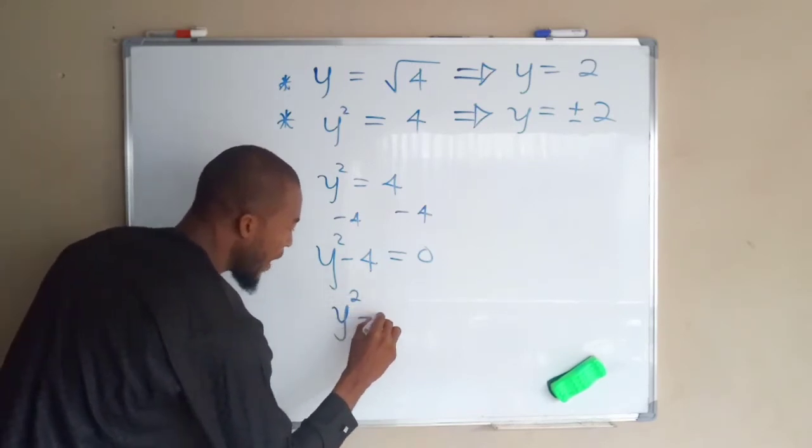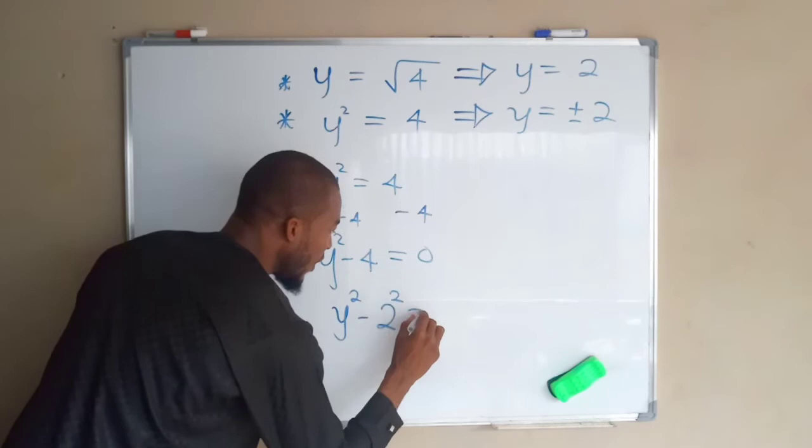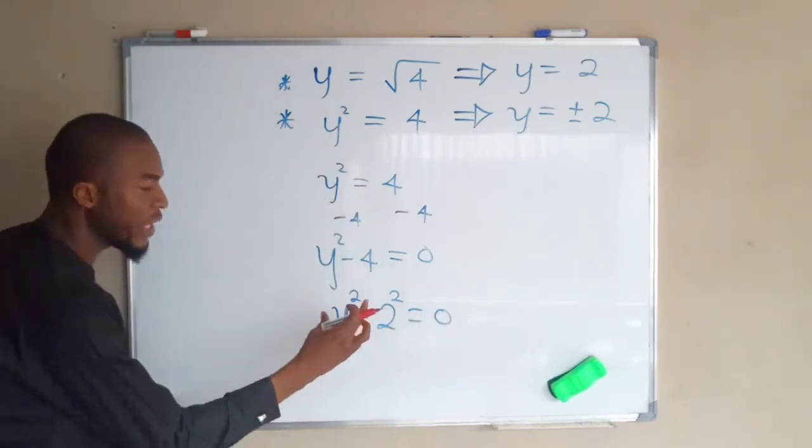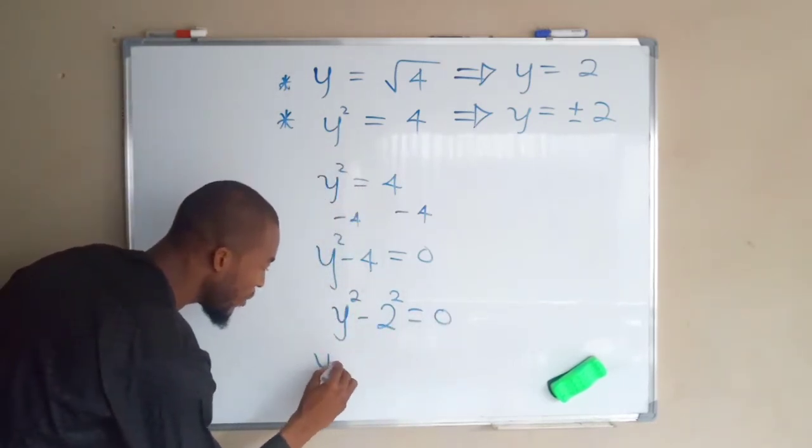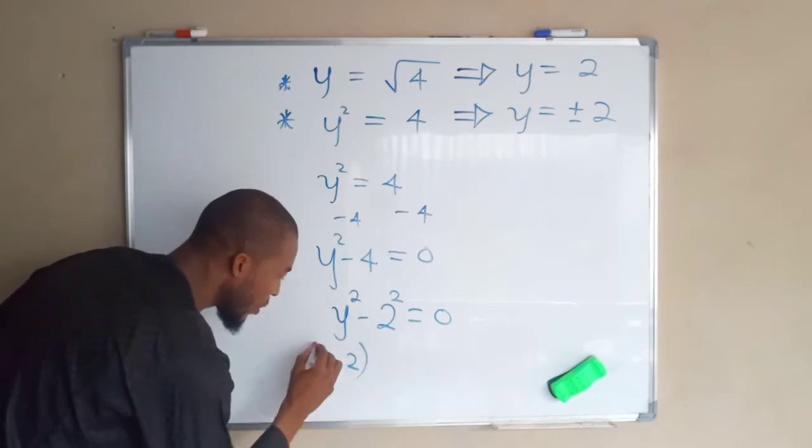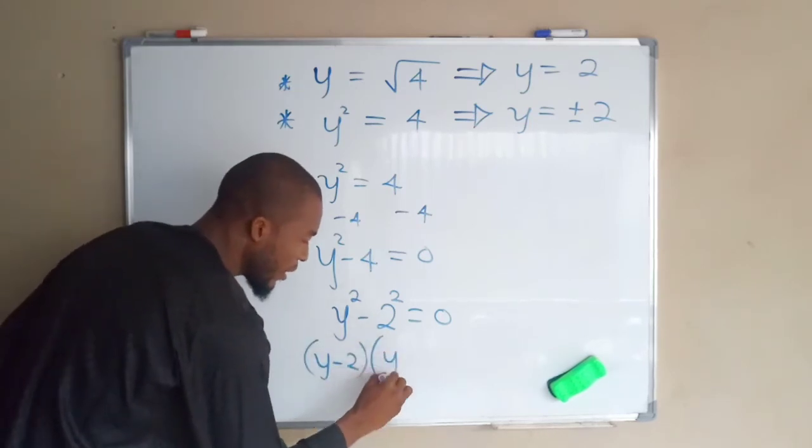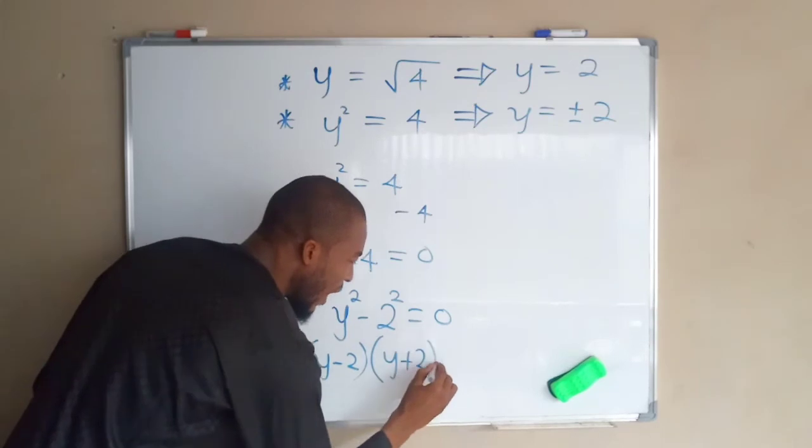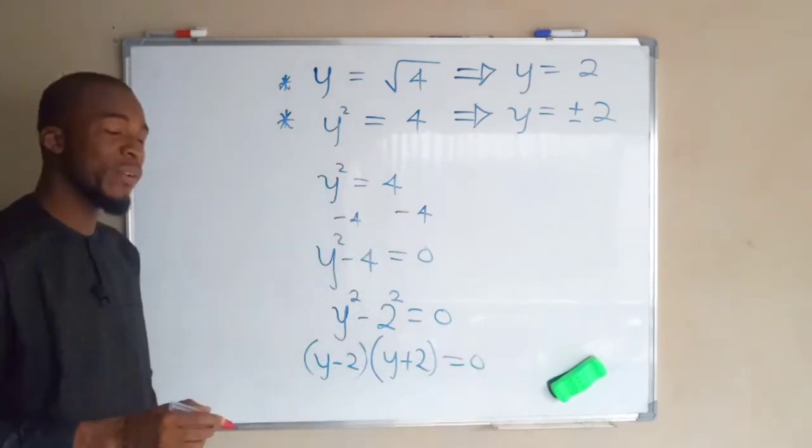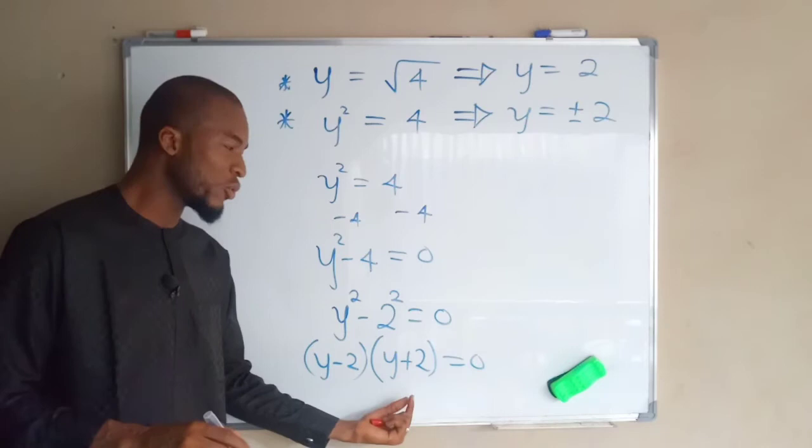Y squared minus two to the power of two equals zero. This can be written as y minus two multiplied by y plus two, and to the right hand side we still have zero.